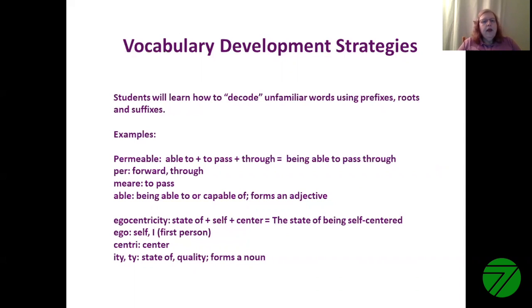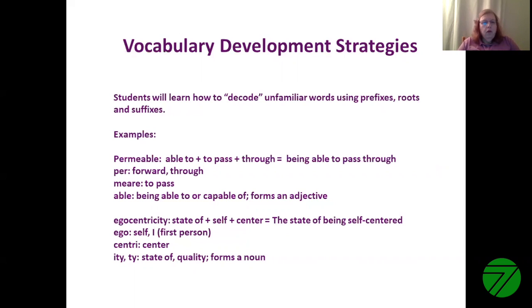For example, the word permeable. If you've never seen this word before, but you can identify one or all of its elements, you would know that per means forward or through, mere means to pass, able means being able to or capable of, and it forms an adjective.